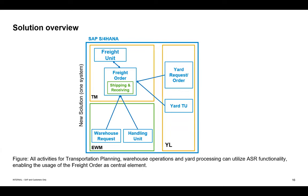The Advanced Shipping and Receiving scenario connects EWM and TM: all postings from EWM and yard logistics go directly to the freight order object in TM. There is no transportation unit handling in EWM in this scenario, and no data replication through interfaces — all updates are immediately reflected on the freight order.